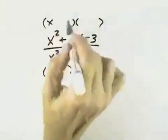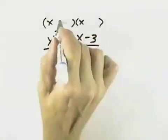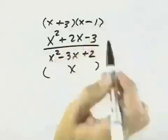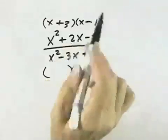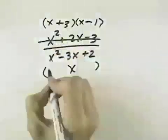In the numerator, we know that both factors of this trinomial will start with x. We know they'll have opposite signs. And if we try plus 3 and minus 1, that will give us a positive 2x in the middle. So we can factor the numerator into x plus 3 times x minus 1.